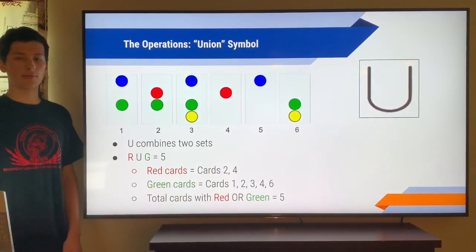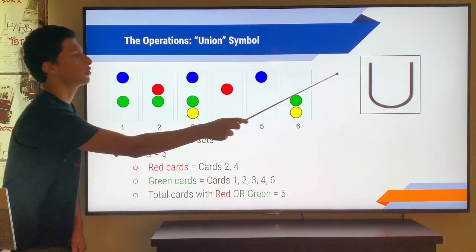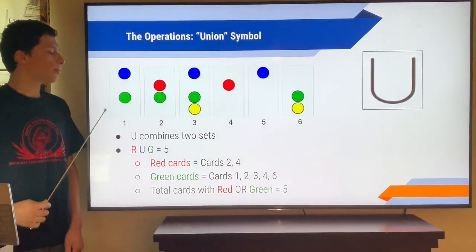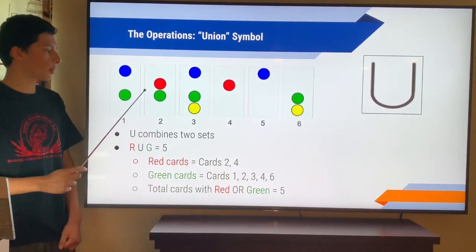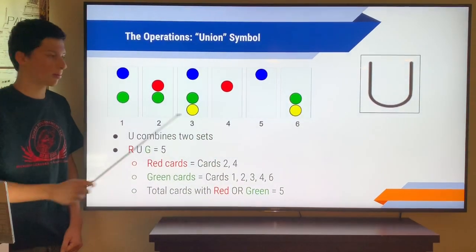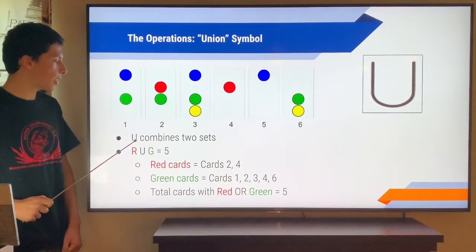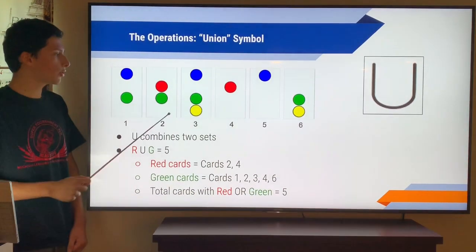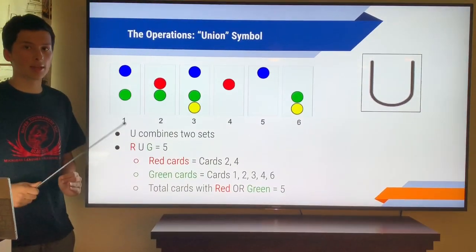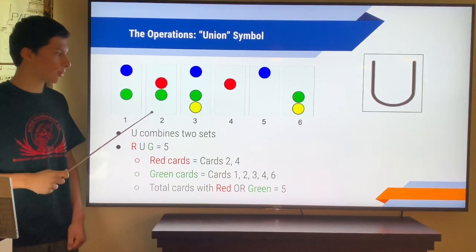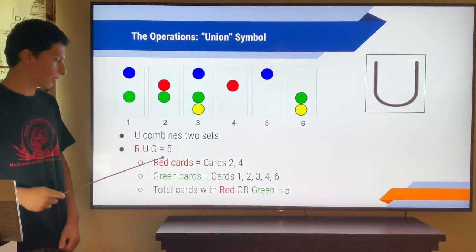Let's go over the operations now. There are 4 main distinct ones. The first one is union. Union, or it's called OR, like O-R, is represented by this U symbol. U for union. So what it does is it combines two sets, and it takes the addition of these sets. So let's say we had red or green. First, we look at all the red cards. So cards 2 and 4 have red. Now we're going to add them to the green cards. So where are the green cards? Green cards are cards 1, 2, 3, and 6. So the cards that have red OR green include cards 1, which is green, cards 2, which is red and green, cards 3, which is green, cards 4, which is red, not card 5 because it doesn't have red or green, and then card 6, which is green. So this answer would be 5.